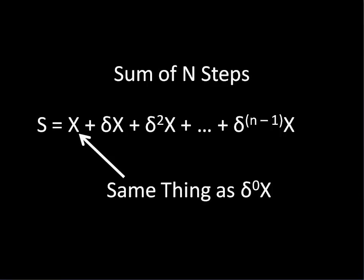And you can see that because x equals discount to the zeroeth power times x. Whenever you put something to the zeroeth power, it becomes one, and thus discount to the zero goes away and just leaves x remaining. So there's actually n number of steps here, even though it says n minus one.